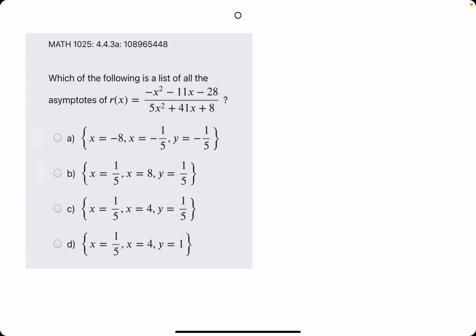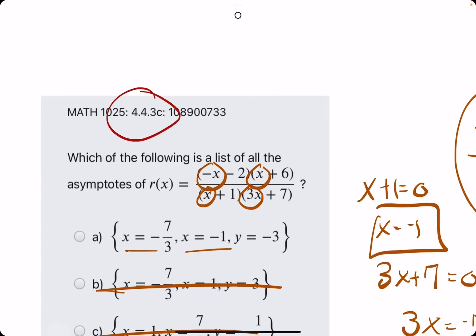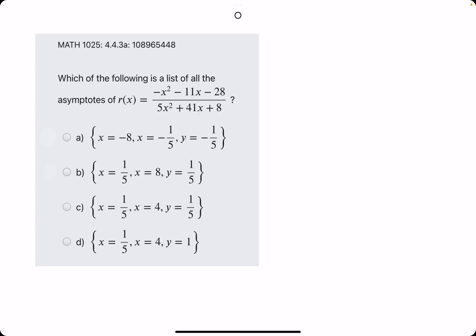Okie dokie. In this problem, we'll be using the same techniques we talked about in 443C. However, the function they present us with is not in factored form. So, in some ways it might make it easier, in other ways it might make it more difficult. Let's talk about why.